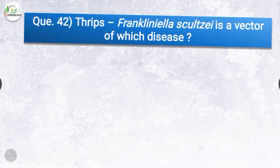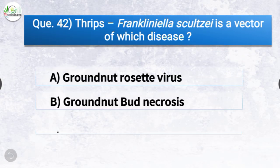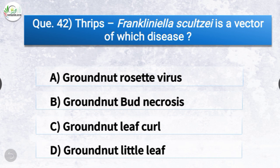Question number forty-two: Thrips Frankliniella schulzei is a vector of which disease? The options are groundnut rosette virus, groundnut bud necrosis, groundnut leaf curl, or groundnut little leaf. The correct answer is option B, groundnut bud necrosis. Aphid is the vector of groundnut rosette virus.